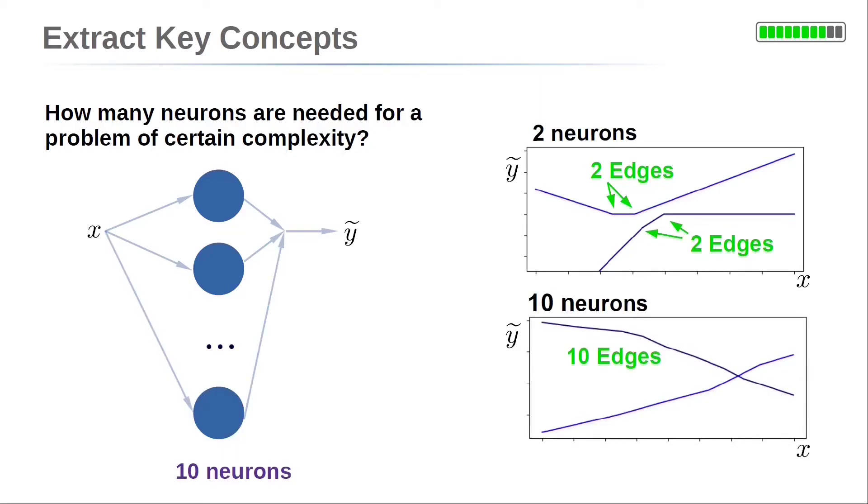If you take more neurons, like ten neurons, you can approximate functions with eleven line segments. So these functions can have ten edges.